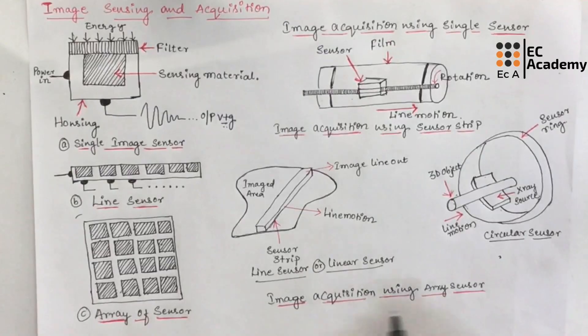Now we will understand image acquisition using array sensor. So figure C shows the array sensor. These type of sensors are found in digital cameras. So usually these type of sensors will be used in digital cameras. These sensors are known as CCD array which are known as charged coupled device array. So motion of this sensor or moment of this sensor is not required for these type of array sensors.